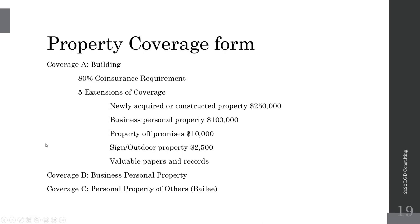Coverage A covers the building. Coverage B covers business personal property — the contents: desks, computers, everything in the building that you own. Coverage C is personal property of others — sometimes called bailee coverage. For example, a dry cleaning operation: customers leave their clothes, the building burns down, and you replace their clothes on an actual cash value basis. That's Coverage C.